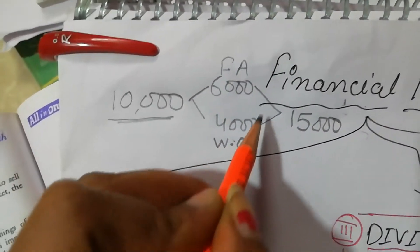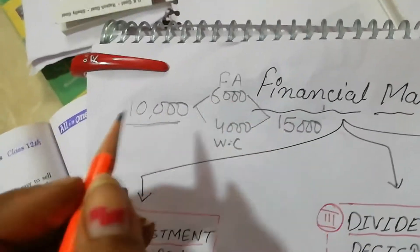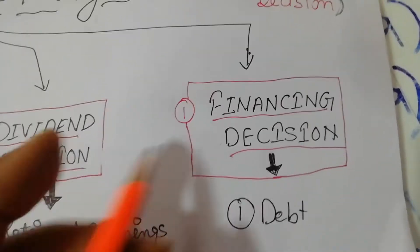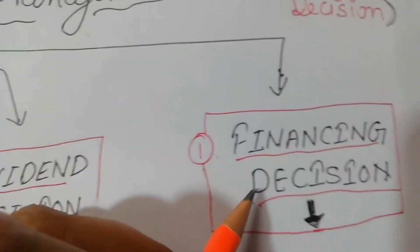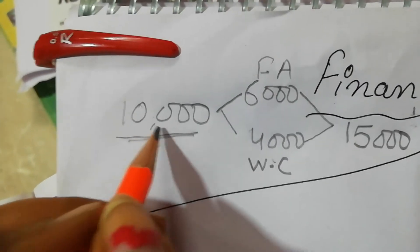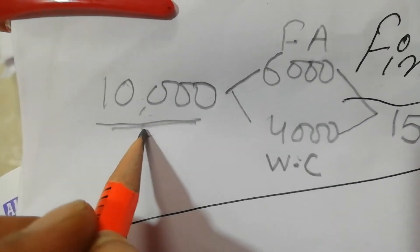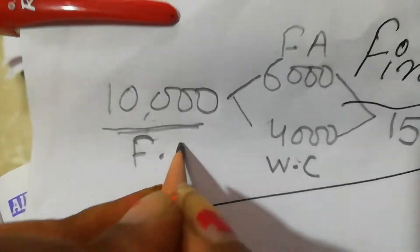So you have three amounts: 10,000, then 6,000 and 4,000, and then 15,000. The first 10,000 — where it came from, how it came — that is what we call the financing decision. This is the financing decision.